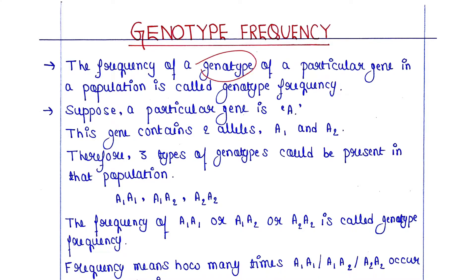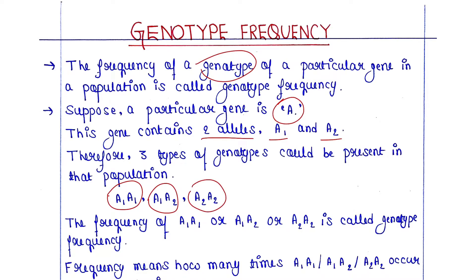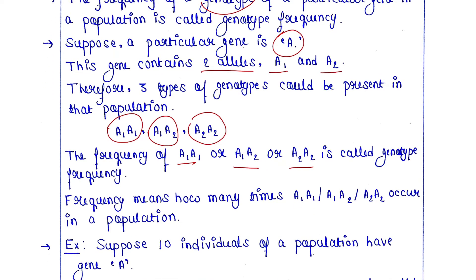The frequency of a particular genotype of a gene in a population is called genotype frequency. Suppose a particular gene A contains two alleles, A1 and A2. Therefore three types of genotypes could be present in that population: A1A1, A1A2, and A2A2. The frequency of A1A1, A1A2, or A2A2 is called genotype frequency.